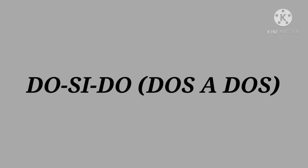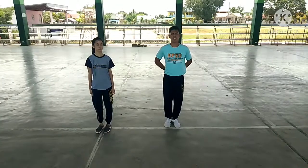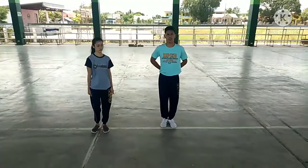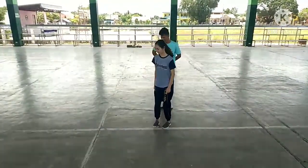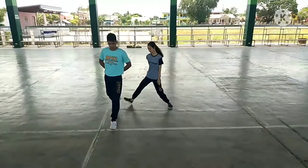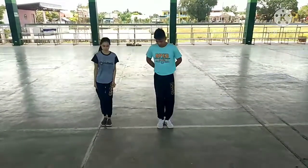Dosido or dos-a-dos: Partners advance forward past each other's right or left side, step across to the right or left, move backward without turning around, past each other's left or right side to proper places.